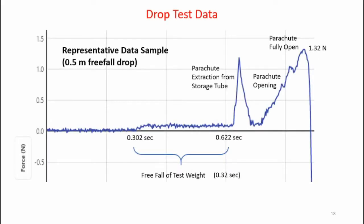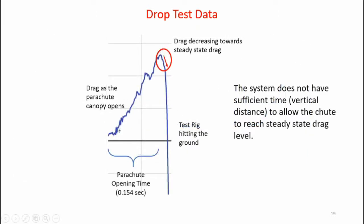I've completed all my experimental runs. Let's take a look at the results. Here's a data sample from one of the drop tests — this is for the 0.5 meter free fall. We see where the test block is released and it free falls for about one third of a second until it pulls the parachute out of the storage tube. The initial signal is not drag — this is actually friction of the parachute coming out of the tube. Here is where the parachute begins to open and the loads increase during descent. The maximum load recorded in this test was 1.32 newtons. As the canopy opens up the load increases, reaches a maximum, and then drag begins to slow the system down towards a steady state drag condition. The spike at the end is not real data — that's where the system hits the ground. The parachute opened in 0.154 seconds, so it happens very quickly.